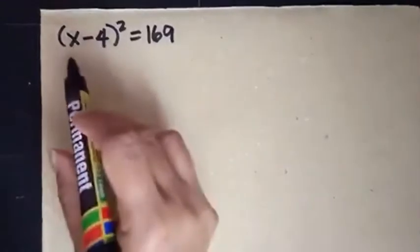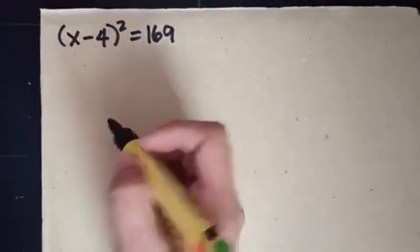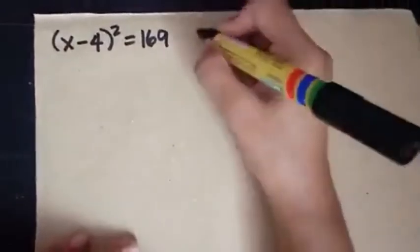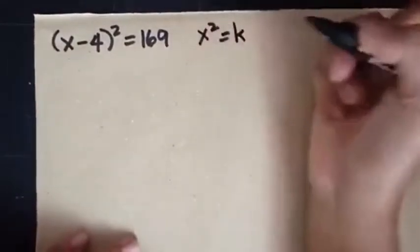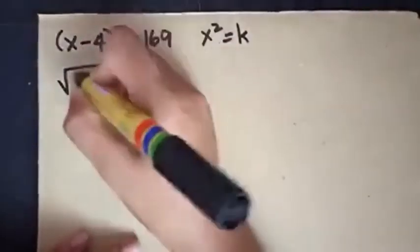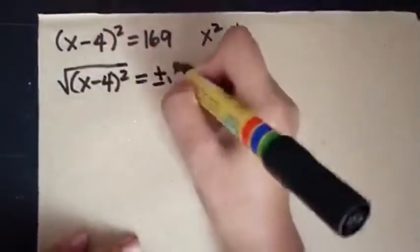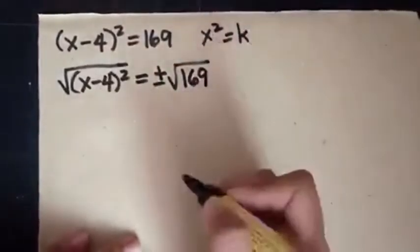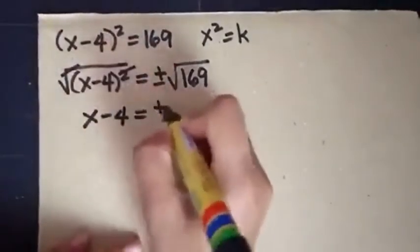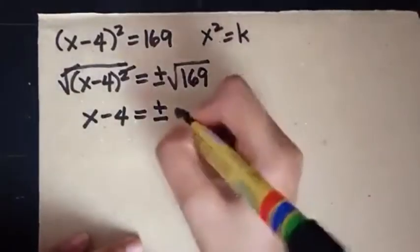What if we have the equation x minus 4 squared equals 169? This equation is already written in the form x squared equals k, so we can proceed to extracting the square root right away. We have the square root of x minus 4 squared equals plus and minus the square root of 169. So x minus 4 equals plus and minus 13.